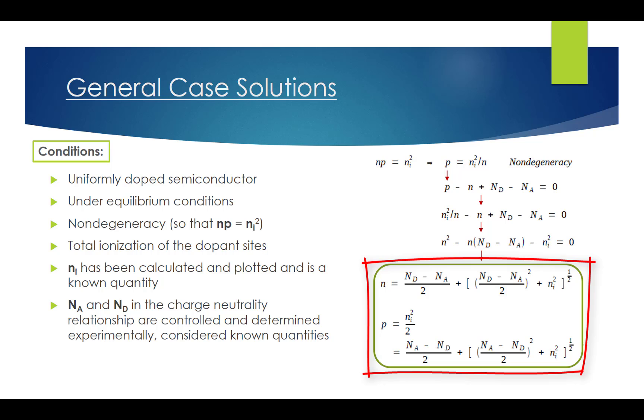The n and p expressions are general case solutions. In the vast majority of practical calculations, we usually simplify these equations before substituting in numerical values for Nd, Na, and ni.